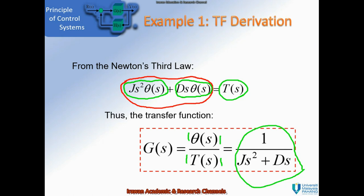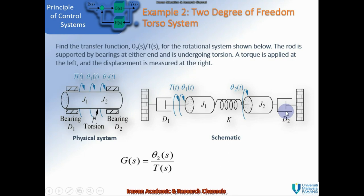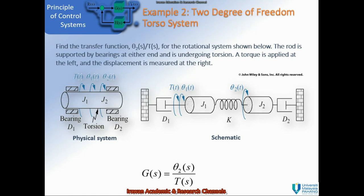Next, we move to the two-degree-of-freedom torso system with inertia J1 and J2. J1 is connected to J2 via spring K, with J1 having angular displacement theta1 and J2 having theta2. J1 is connected to the wall with damper D1, and J2 is connected to the wall with damper D2. The goal is to find the transfer function of the system from the applied torque T to theta2.